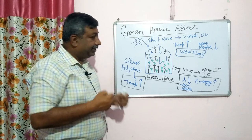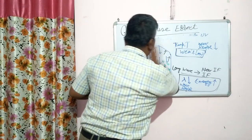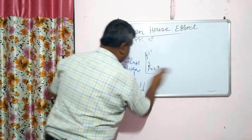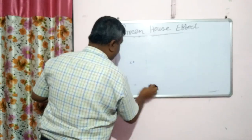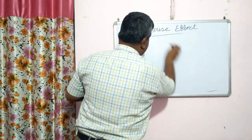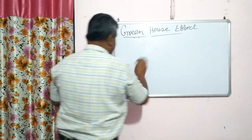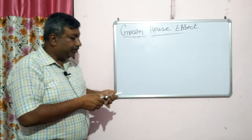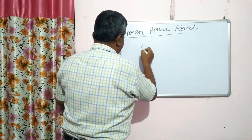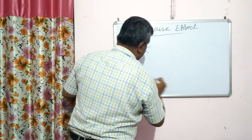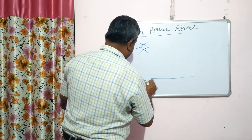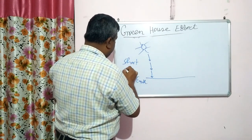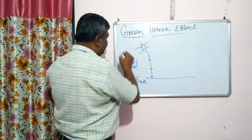Now, how is this greenhouse effect correlated with the earth? How is greenhouse effect related to global warming? In the case of global warming, temperature is increasing throughout the globe. The entire world's temperature is rising — that is what we call global warming. The sun radiates short wave radiation, and in normal conditions during daytime, solar radiation comes to the earth.